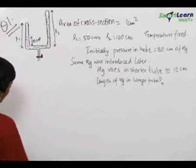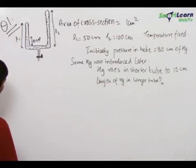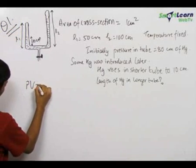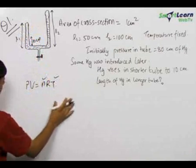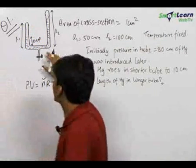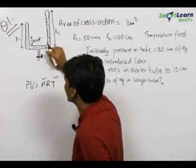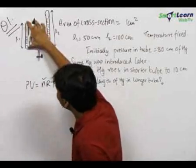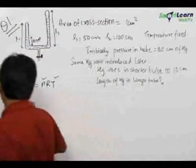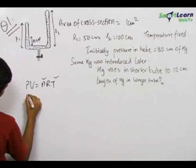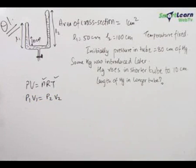What we need to find out is the height to which mercury rises in the longer tube. To solve this, let us first analyze what happens to the gas in the smaller tube. We write PV equals NRT. The temperature of the gas is fixed for the smaller tube, and the number of moles is also fixed. When mercury is inserted, the gas in the smaller tube gets compressed. So we can write P1V1 equals P2V2 — this is also known as Boyle's law.